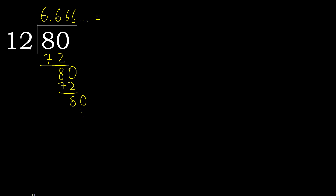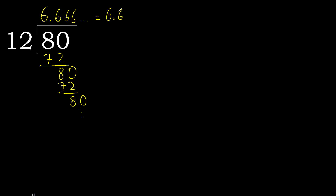Therefore, 80 divided by 12 is here — or after the point: 6, repeat, repeat. Like this. 80 divided by 12 equals 6.666... repeating.